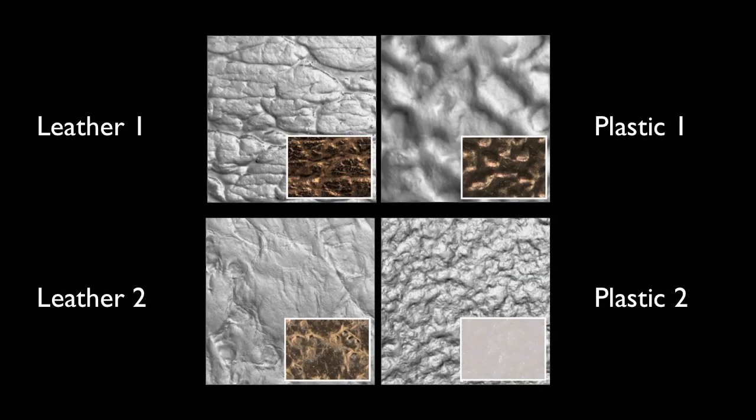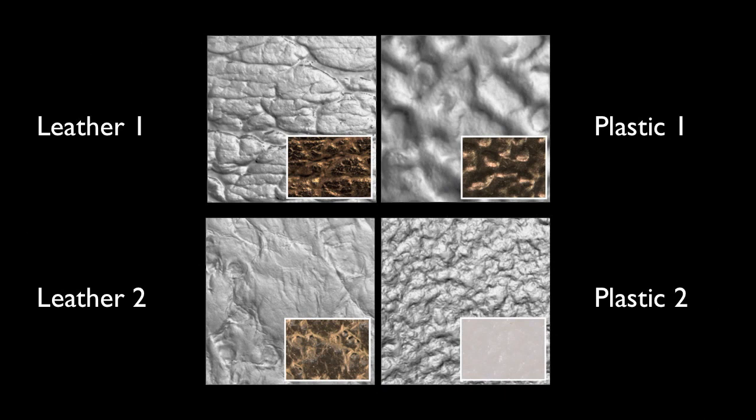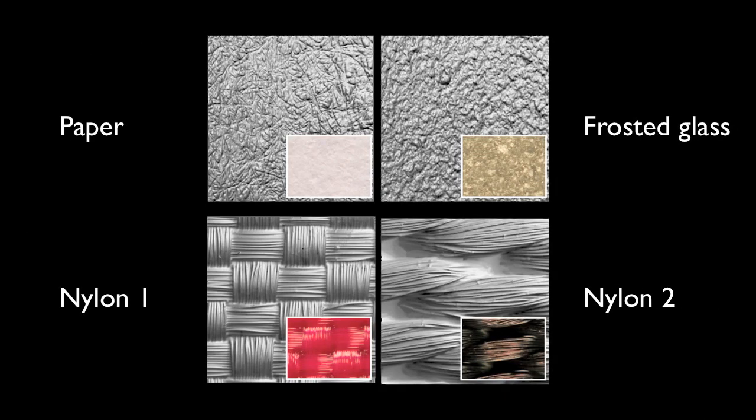GelSight can measure the surface topography of any rigid material. Here we show renderings of our measurements for a variety of materials, with color photographs of the same materials in the insets.